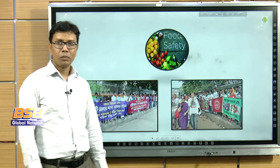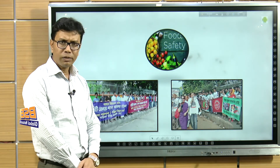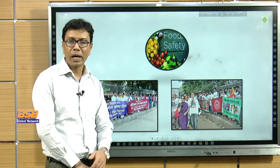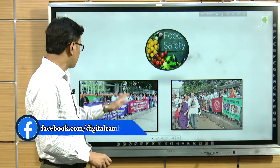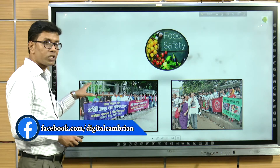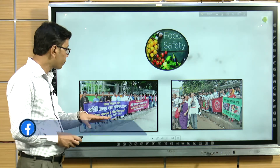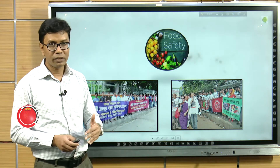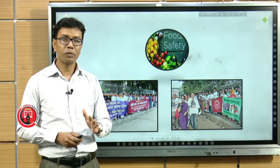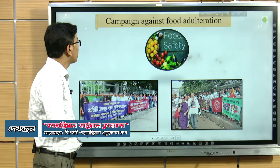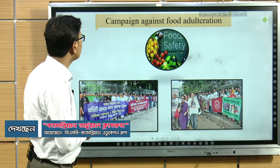But people are not sitting idle — they are doing something against this illegal practice in our society. People here are in a human chain, protesting against food adulteration and food contamination. They are campaigning to make people aware, and our government is also trying to stop food adulteration from different sectors.